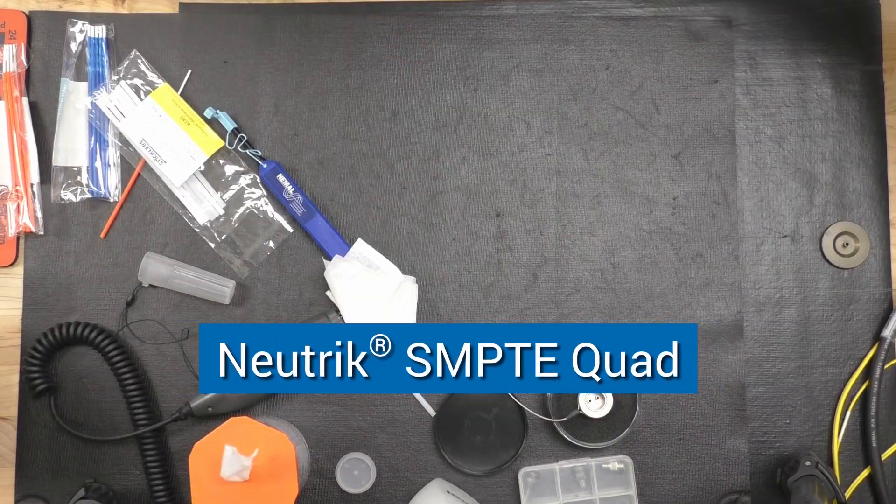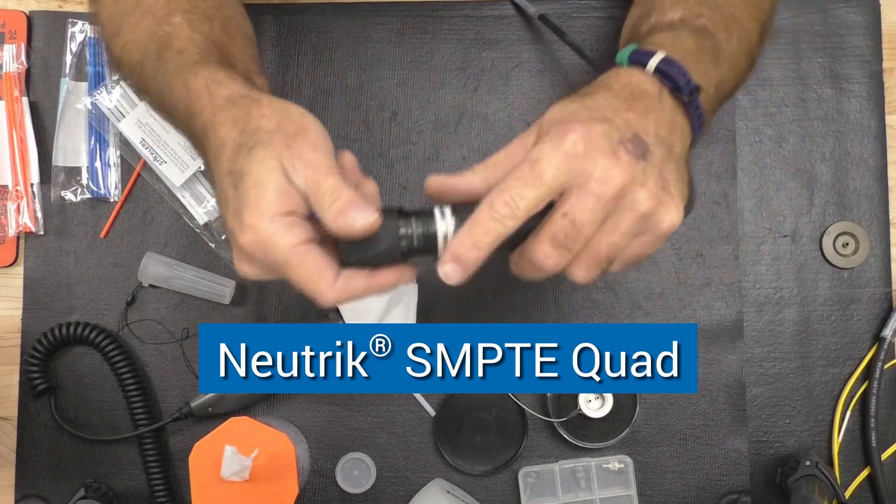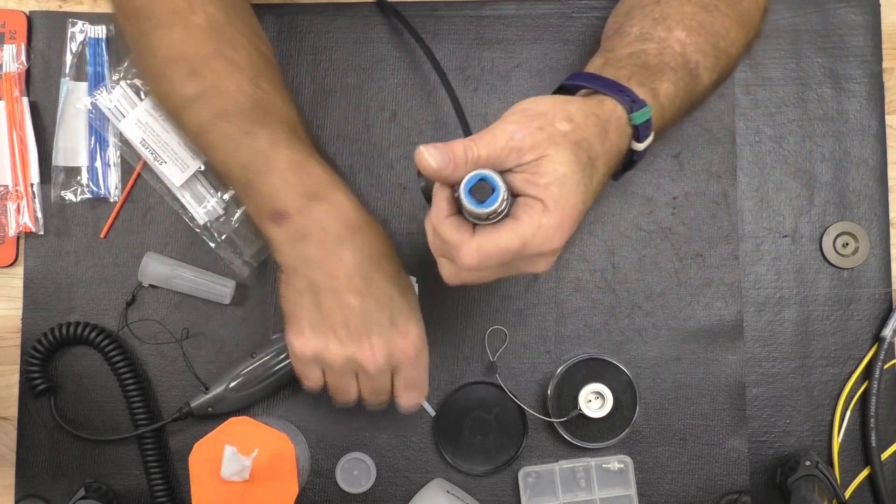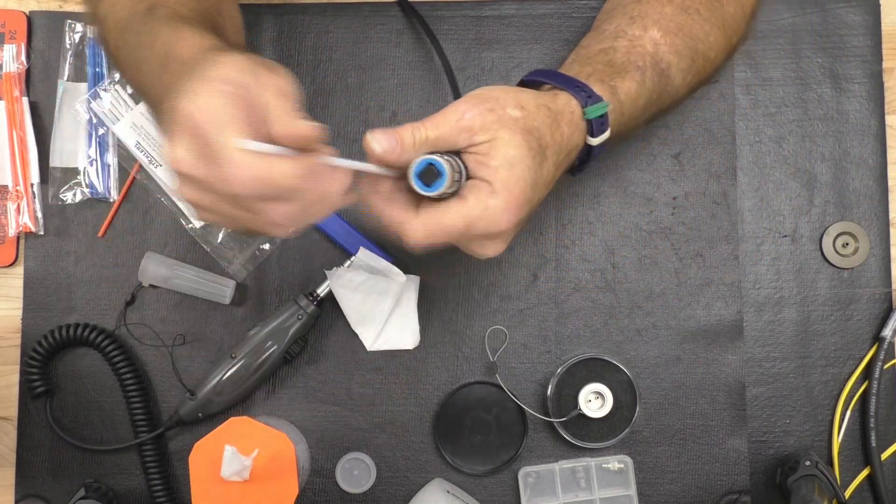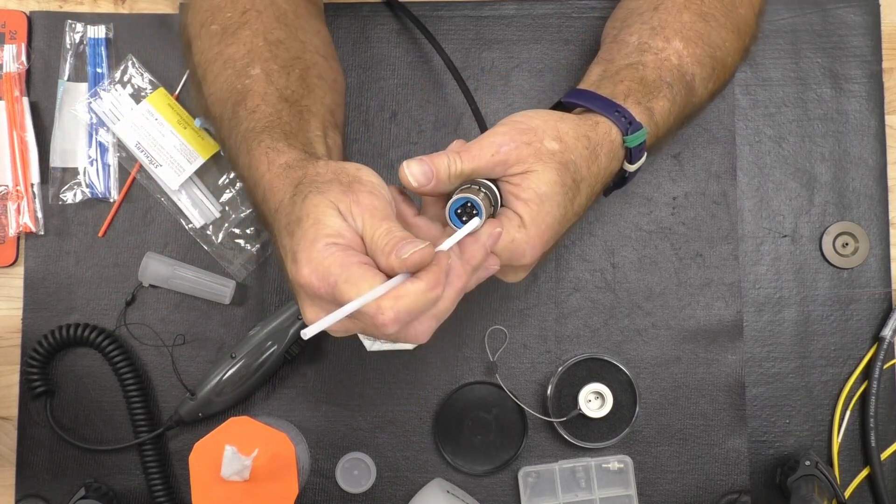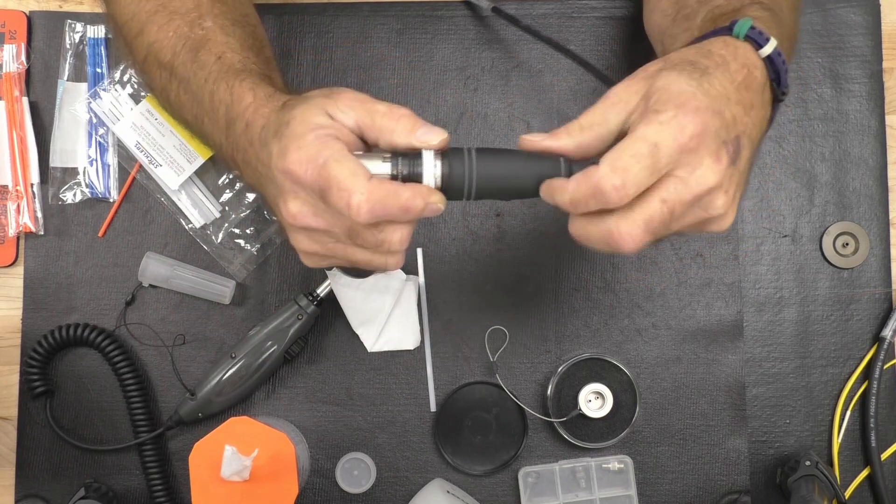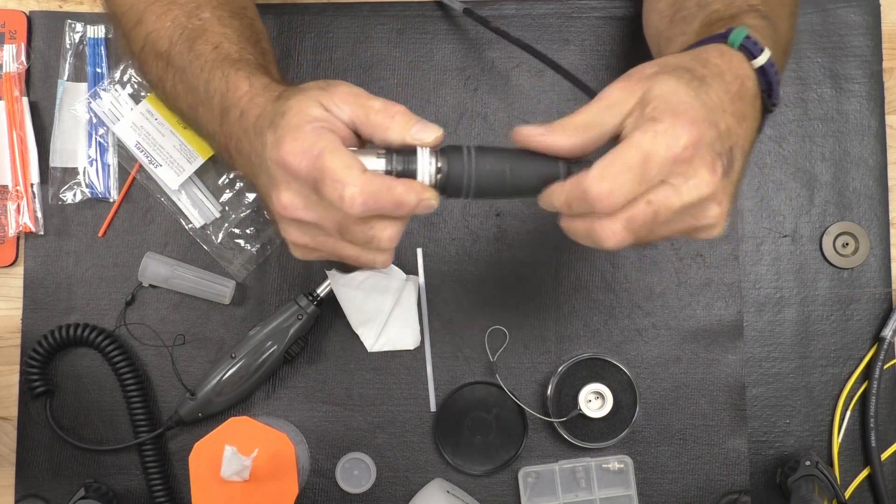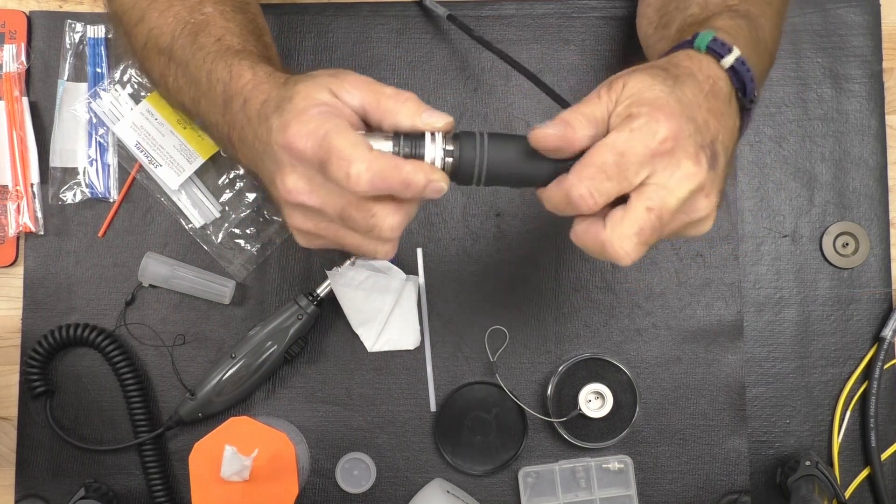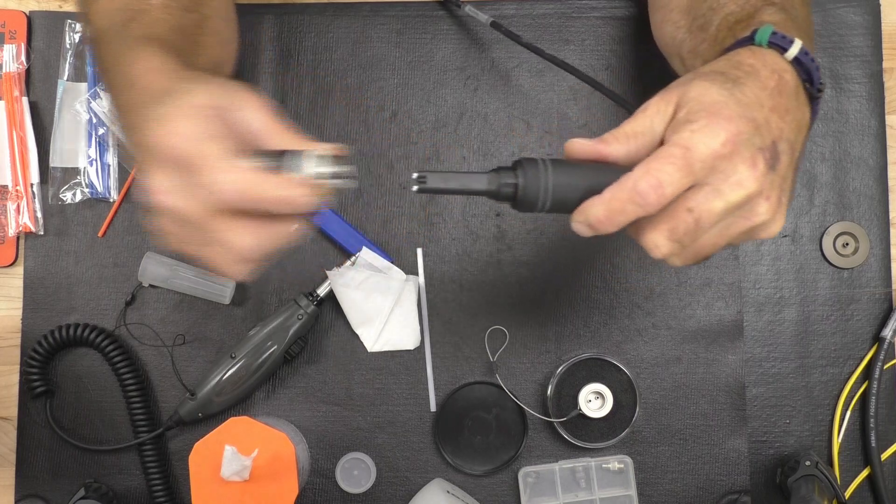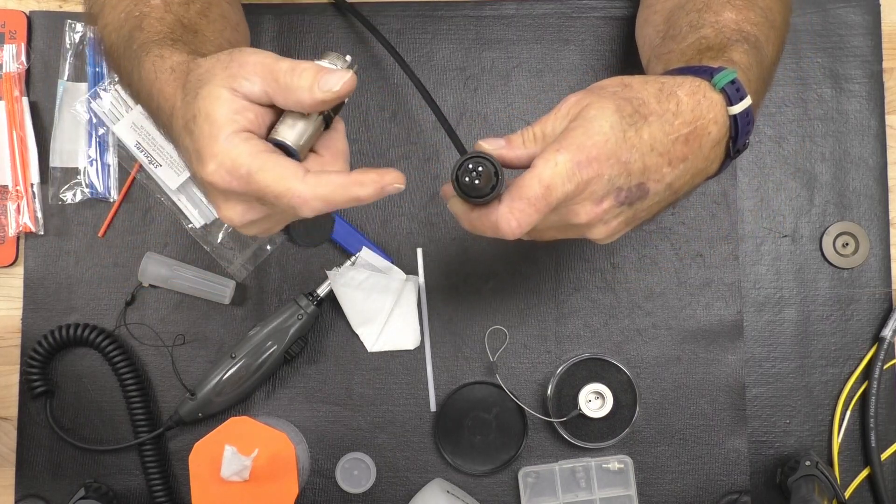The quad version of the connector is identical, except for it actually has four contacts behind the shutter system. But removing the head the same way. Simply rotate the back nut until it clears. Pay attention to the large polarizing key. Remove the head. Now you have four contacts.